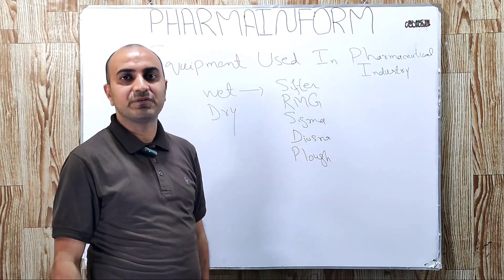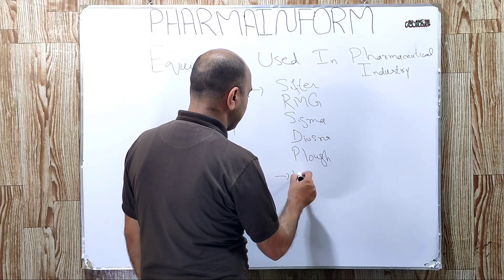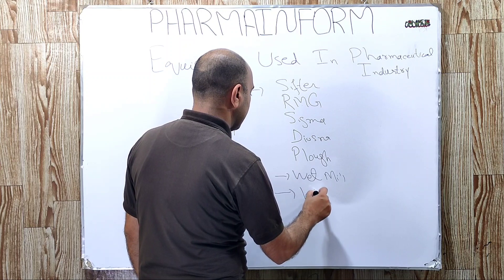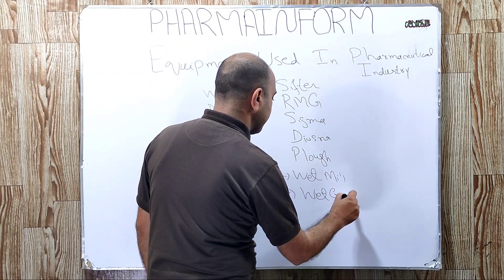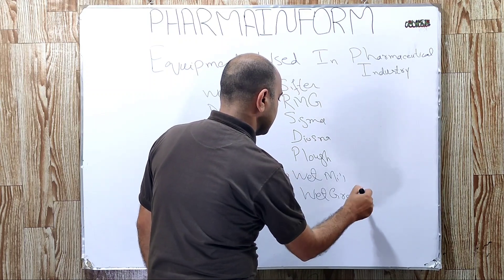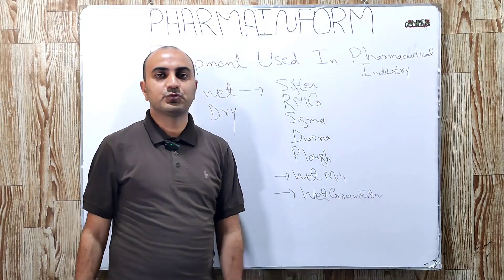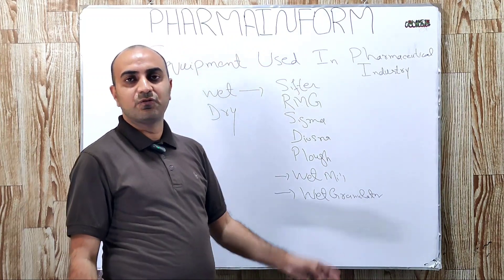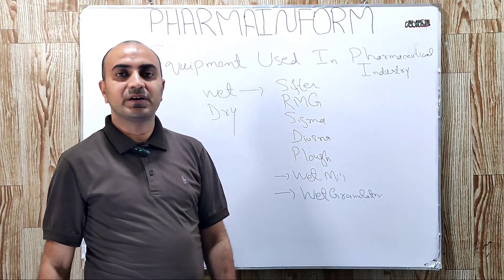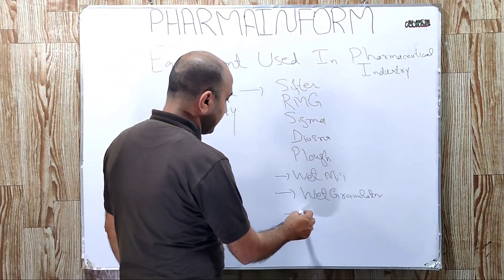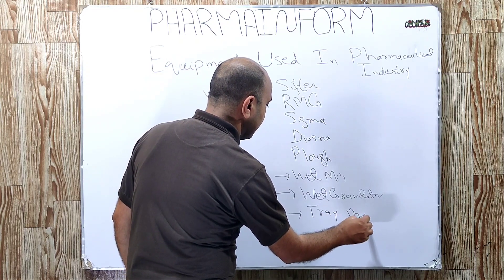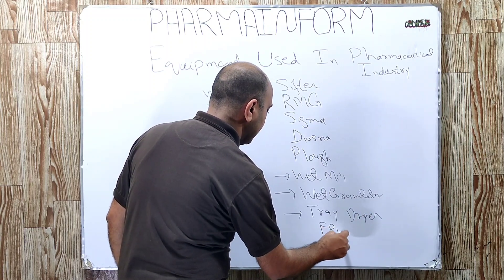The next step is wet sieving. For wet sieving, you commonly use a wet mill or wet granulator, which is used to reduce the particle size of the wet mass to facilitate drying. The next step is drying. For drying, we use different types of dryers — the most common are the tray dryer and the FBD, or fluid bed dryer.